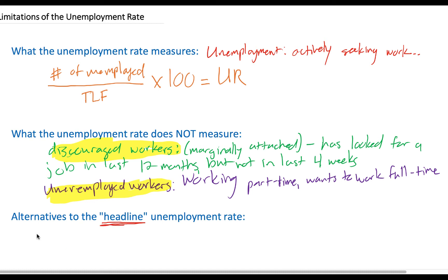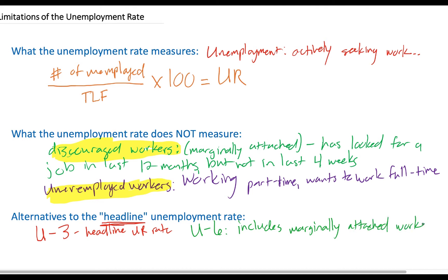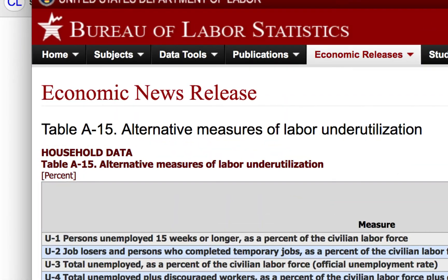The BLS has developed alternative measures beyond just the headline unemployment rate. When you read in the newspaper that the unemployment rate has fallen or risen, that is a measure the BLS calls U3 — the headline rate defined above. However, for a broader measure, the BLS has developed something called U6. U6 is the headline rate plus marginally attached workers such as discouraged workers and underemployed workers. It's useful to compare U3 to U6 to see how far the headline figure is from the situation experienced by millions of people.